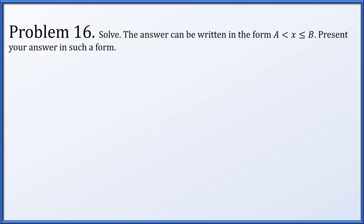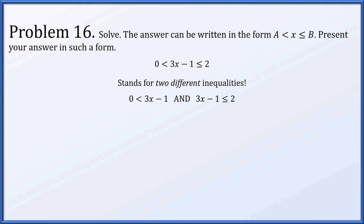Problem sixteen: solve 0 is less than 3x minus 1 is less than or equal to 2, with the answer in the form a less than x less than or equal to b. This splits into two inequalities: 0 less than 3x minus 1, and 3x minus 1 less than or equal to 2. Adding 1 and dividing by 3 on both sides gives x greater than 1 third and x less than or equal to 1. So the solution is 1 third less than x less than or equal to 1.